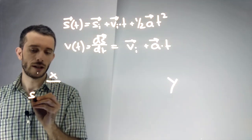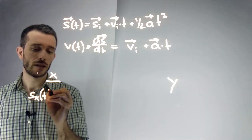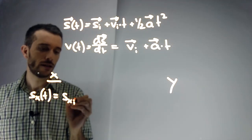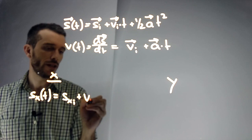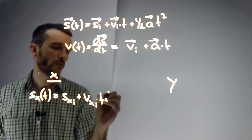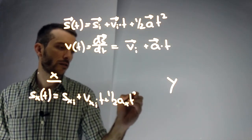As an x-equation, I can say that the position in x is x-initial plus v x-initial times time plus one-half a x times t squared.